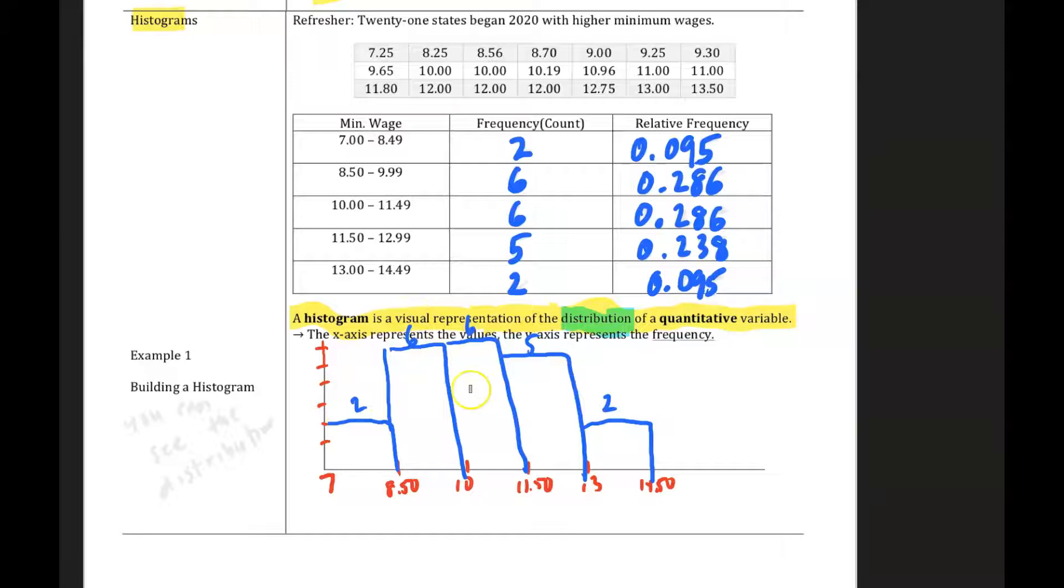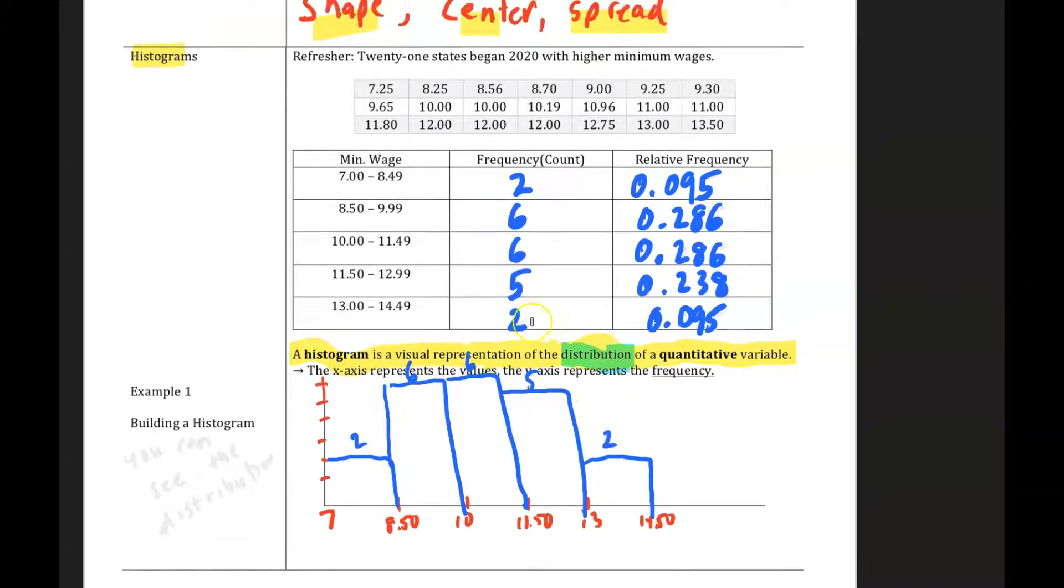And then you can see, then you draw the bars in. It's a visual representation of the distribution of a quantitative variable. And so that's what it would look like here. And of course, this is the first time we could do it by hand, but we use technology to truly build it because the data set would be too big.